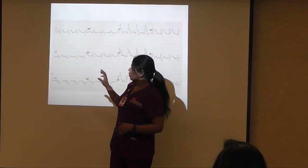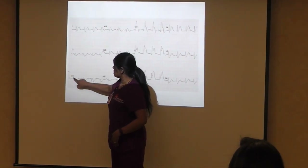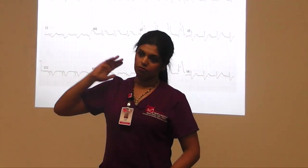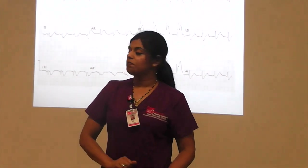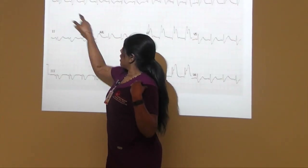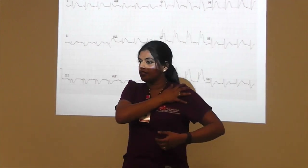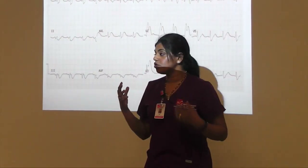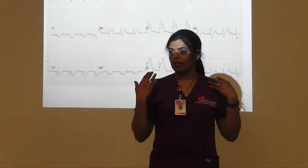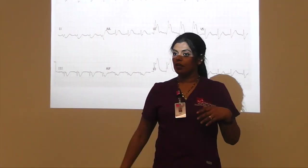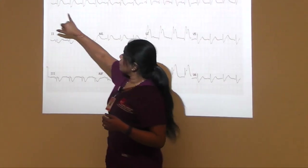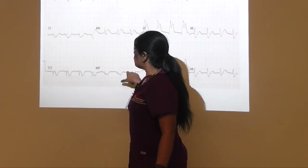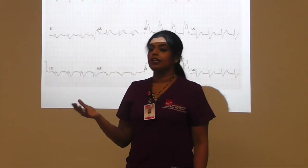In leads 2, 3, and AVF, if you have P waves that are positive, that means the impulse is coming from top to bottom — right atrium going down. Leads 1 and AVL are your left-sided leads. In sinus rhythm, electricity goes from the right atrium to the left atrium, so it's going to be positive in 1 and AVL. If P waves are positive in the inferior leads and in 1 and AVL, more than likely it is sinus rhythm.